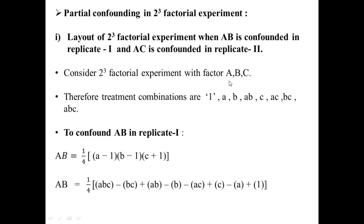Consider this 2³ factorial experiment with factors A, B, and C, where each factor is at two levels. We have a total of 8 treatment combinations: 1, A, B, AB, C, AC, BC, and ABC.